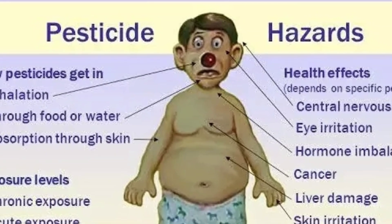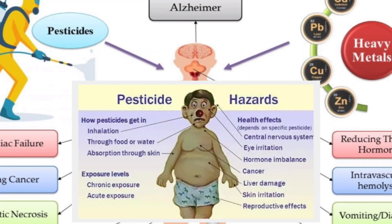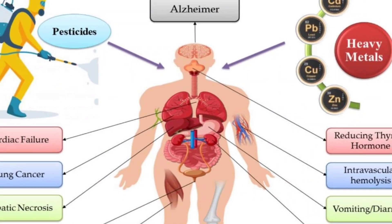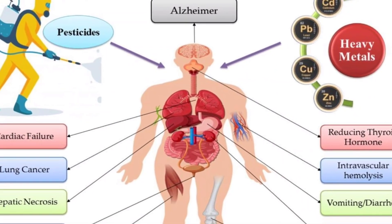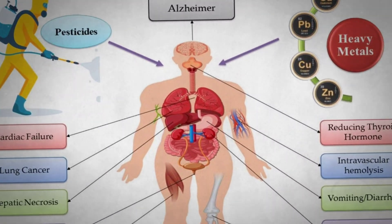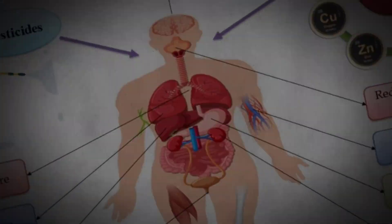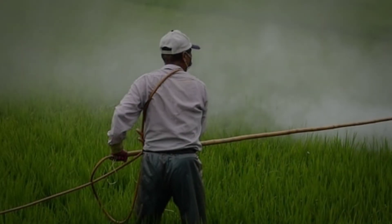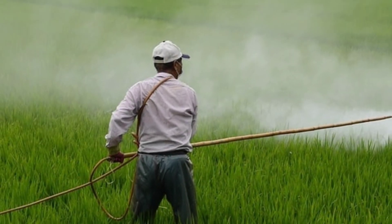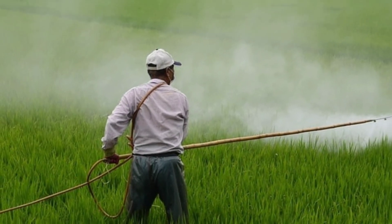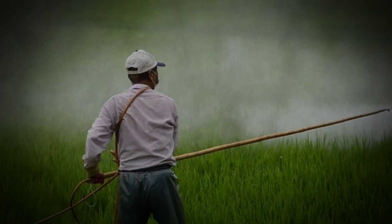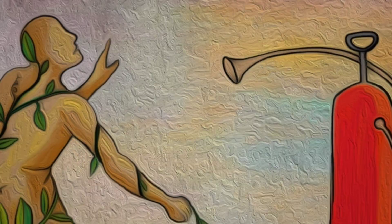After countless studies, pesticides have been linked to cancer, Alzheimer's disease, and even birth defects. Pesticides also have the potential to harm the nervous system, the reproductive system, and the endocrine system.